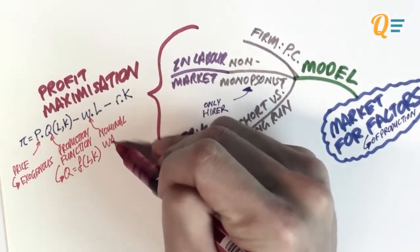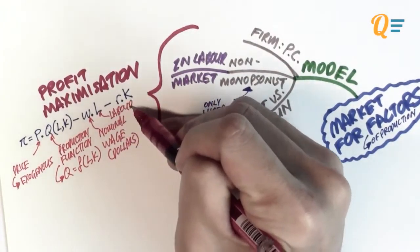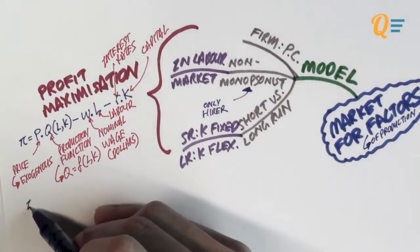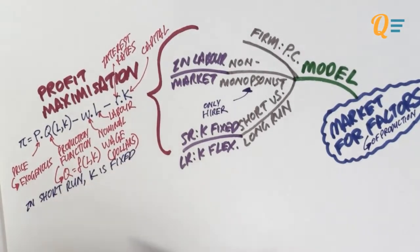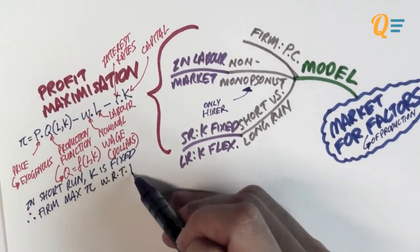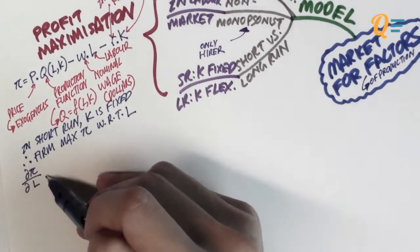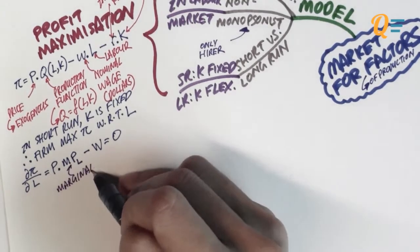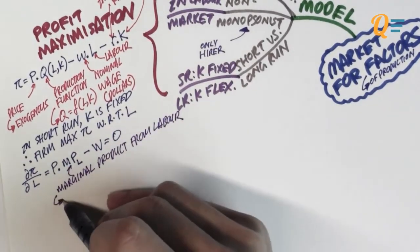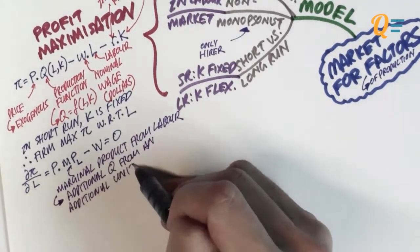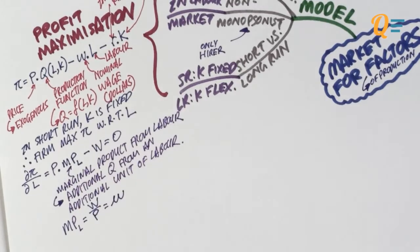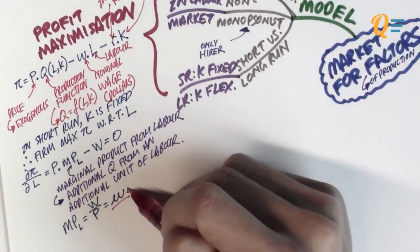W refers to the nominal wage — in dollar form. L refers to the amount of labour, R is the interest rate, and K refers to capital. In the short run, capital is fixed, so the firm maximises profit with respect to labour only. Differentiating the profit function with respect to labour gives us: P × MPL − W = 0, which simplifies to MPL = W/P. MPL is the marginal product of labour — the additional output from adding one more unit of labour.